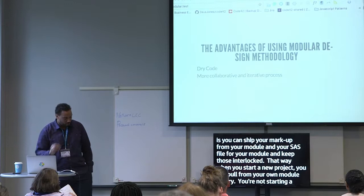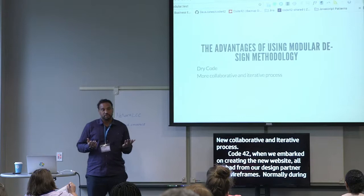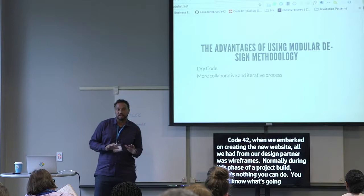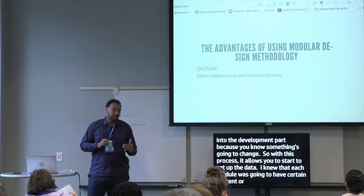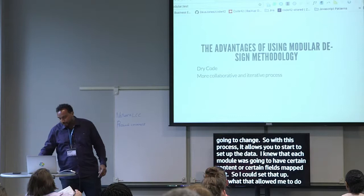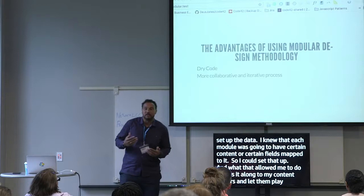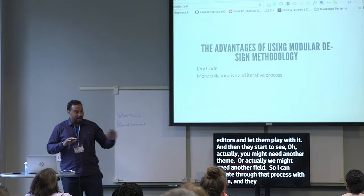More collaborative and iterative process. At Code42, when we embarked on creating the new website, all we had from our design partner at Zeus Jones was wireframes. Normally during this phase there's nothing you can do — you don't know if it's approved, you don't know what's going to change, and you're hesitant to start development. With this process, what it allows you to do is start to set up the data. I knew each module was going to have certain content or fields mapped to it, so I could set that up, pass it to content editors, and let them play with it. They could iterate with the design team and we could all continue to work in tandem.